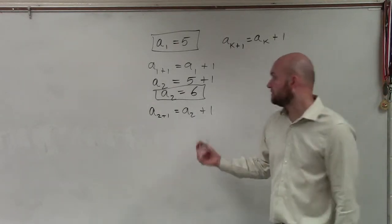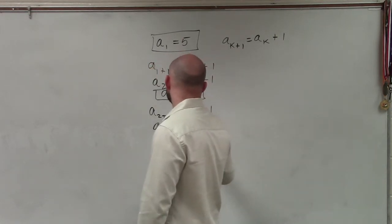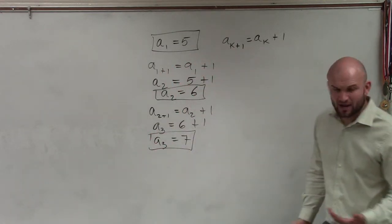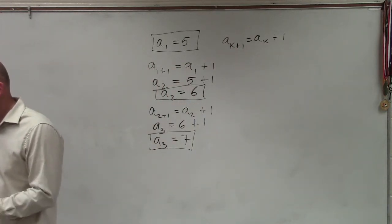So, 2 plus 1 is 3. A sub 2 is going to be 6 plus 1. A sub 3 equals 7. Do you guys see the formula and kind of the pattern that we're following along?